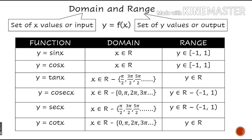For y equal to tan x, since tan x equals sin x upon cos x, this function does not exist for points where cos x is 0. So all those points must be excluded. The domain is R minus the set of points pi by 2, 3 pi by 2, 5 pi by 2, etc. The range is all real numbers, since y can take any real value.